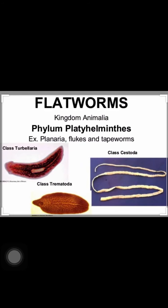Platyhelminthes are commonly called flatworms. Their body is soft and dorsiventrally flat. It may be leaf-like or ribbon-like, and may or may not have pigmentation. False segmentation is also present in some forms.